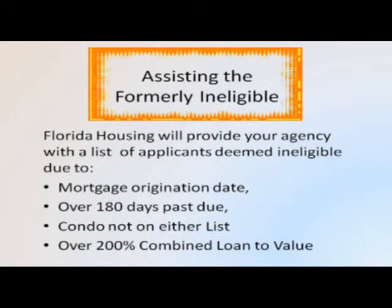When it comes to assisting those who are formerly ineligible, the first step of identifying who those folks are — who are most likely eligible now — we need to wait for Florida Housing staff to do the first search of your agency's applicant list, identifying who was deemed ineligible solely because of their mortgage origination date, 180 days past due, the condo issue, or the combined loan to value. These folks on the list you'll soon receive may very well be getting Hardest Hit assistance soon.